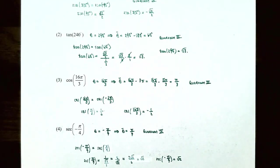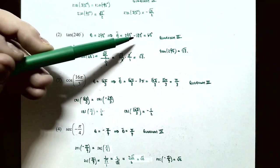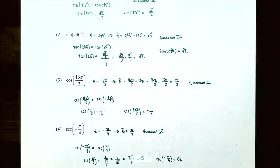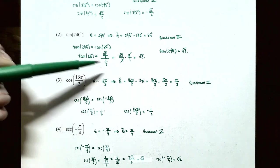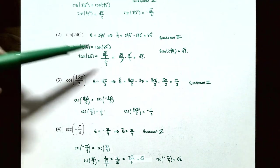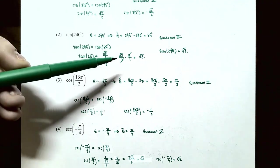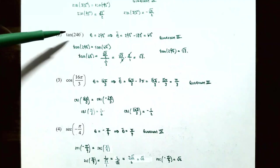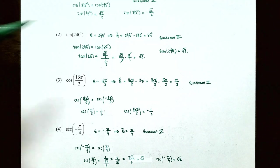Number 2: tangent(240°). Since 240° is between 180° and 270°, theta lies in quadrant three. θ̄ = 240° − 180° = 60°. Tangent(60°) = y/x = (√3/2)/(1/2) = √3. Since tangent is positive in quadrant three, tangent(240°) = √3.